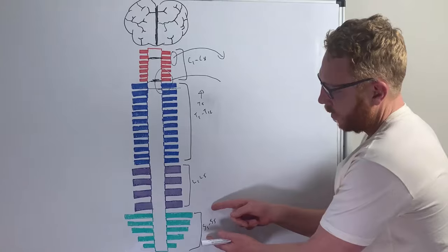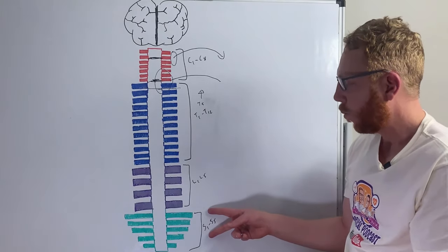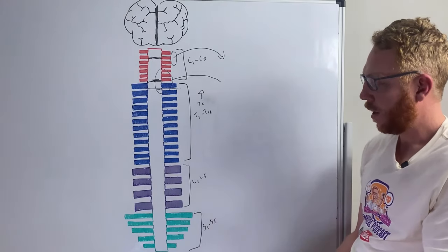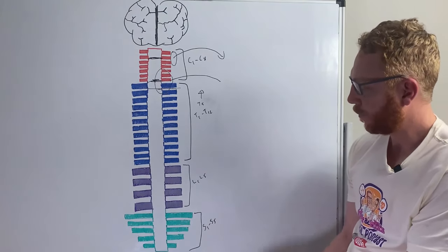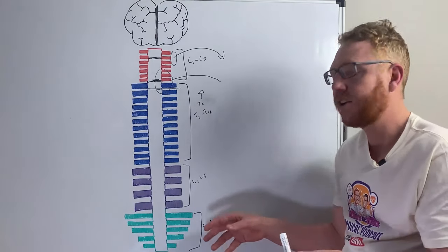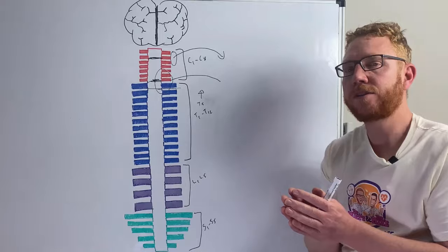As we move into injuries of the sacral region, walking most likely would be okay because the sacral region only impacts the lower leg, but the most profound effect is going to be control to the bowel, the bladder, and sexual function.